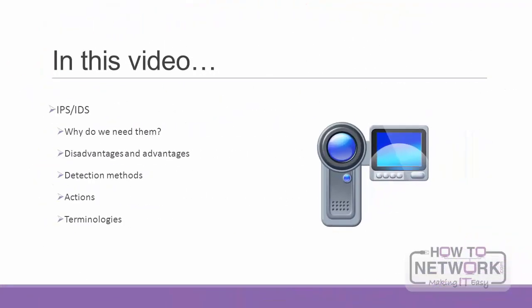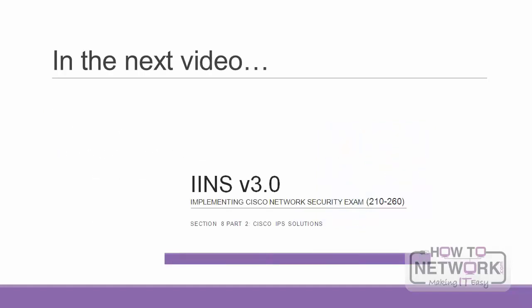This brings us to the end of this section, where we have been introduced to the intrusion prevention system and intrusion detection system. We have considered why we need them, the advantages and disadvantages of each, different detection methods like signature-based and anomaly-based, the actions that can be taken, and terminologies like true positive and false negative.